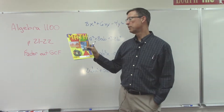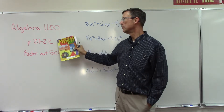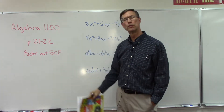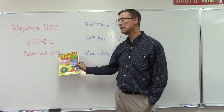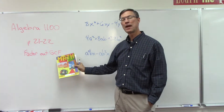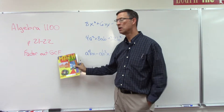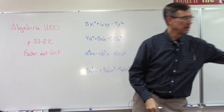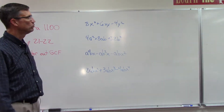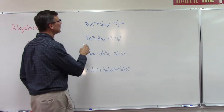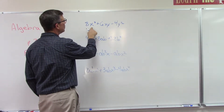We're on Algebra One, the fourth piece 1100, looking at pages 21 through 22. Hopefully you did well on your checkup and we're moving on now to dividing — we're calling it factoring out the greatest common factor. Let's look at some problems that are on pages 21 through 22. I'm going to do this the long way first.